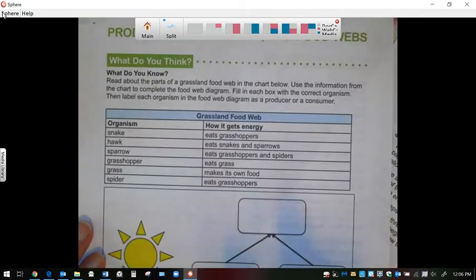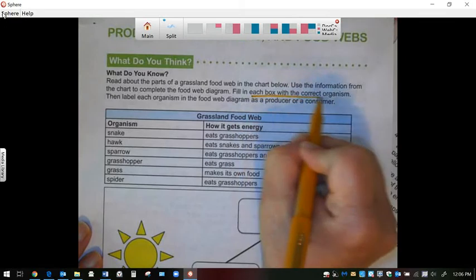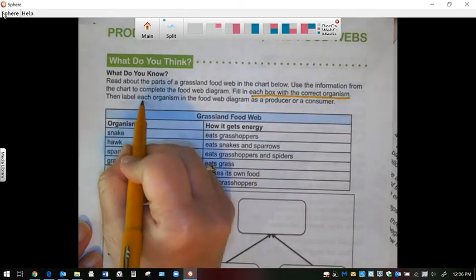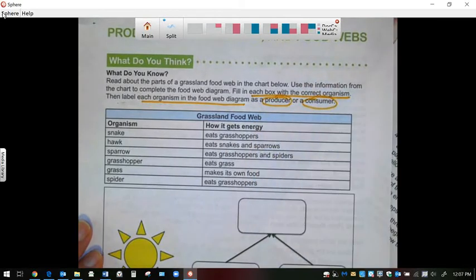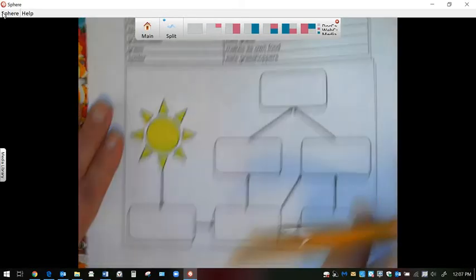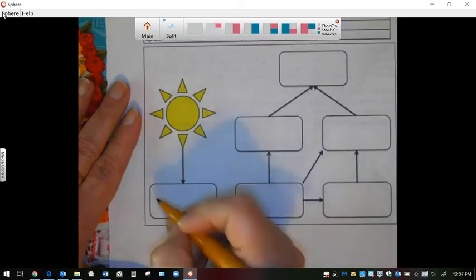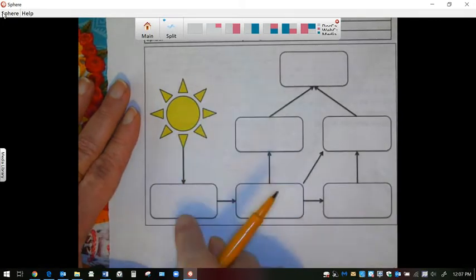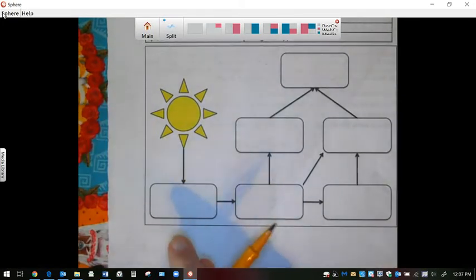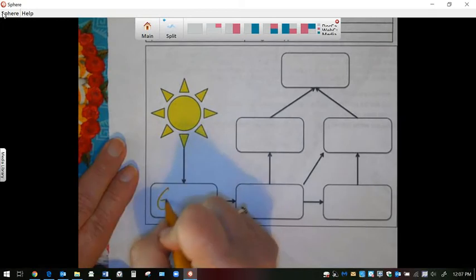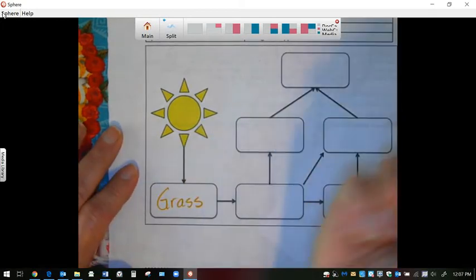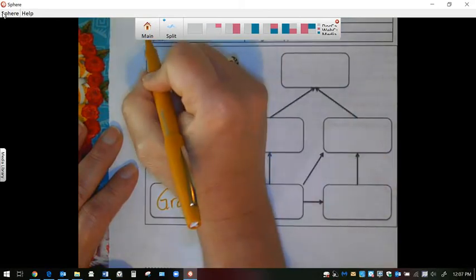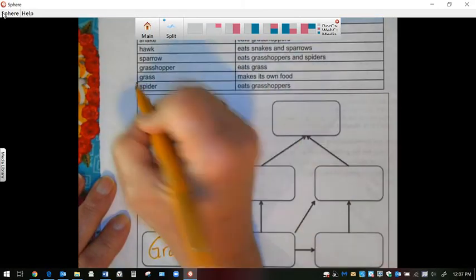And I would like for you to do this as your assignment. It says that you're going to fill in each box with the correct organism, then label each organism if it's a producer or a consumer. So here is the sun. And I will help you by starting it for you. And the first organism that it starts is with grass. So now you're going to write down who eats grass. We can cross out grass because we already used it.